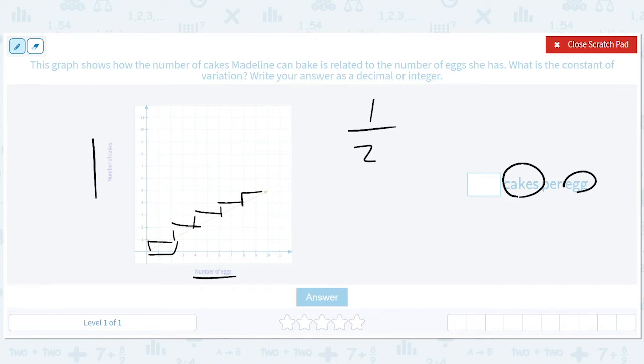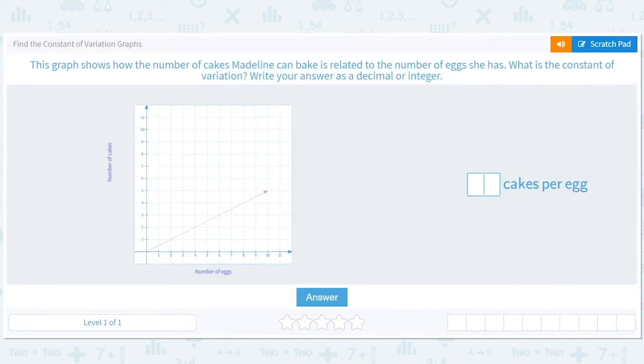And they want us to write our answer as a decimal or integer. So if we were to do one over two, we would have to write 0.5. Hopefully that picture makes sense. If it doesn't, we're going to do this a lot of times, so don't worry about it. You're just getting the sense of it the first time. 0.5 cakes per egg.